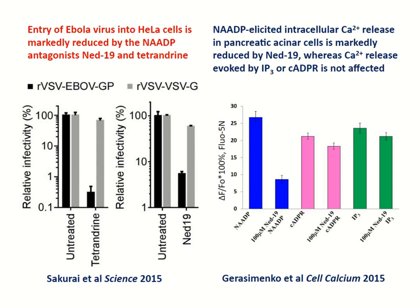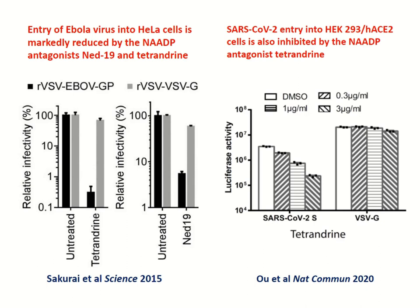We can also use another inhibitor of NAADP action, namely tetrandrine, which is mainly an inhibitor of two-pore channels. Again, it markedly reduces the uptake of the Ebola virus. There are relatively limited data at this moment about SARS-CoV-2 entry, but a recent paper does show that tetrandrine — the inhibitor of two-pore channels — also markedly reduces the uptake of SARS-CoV-2.